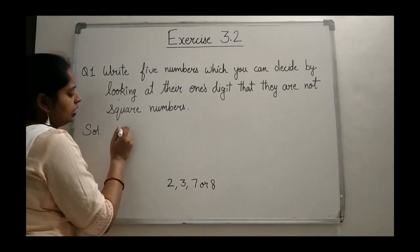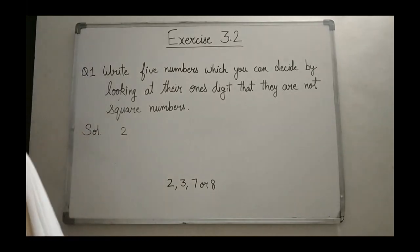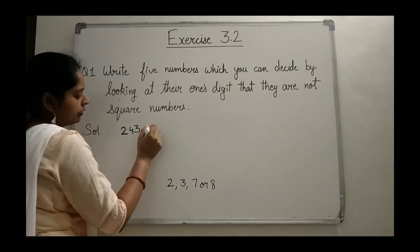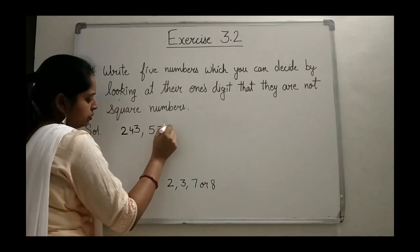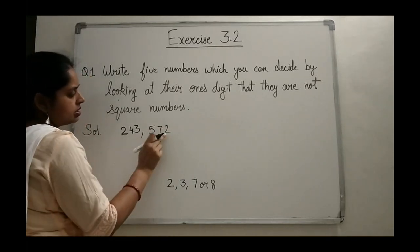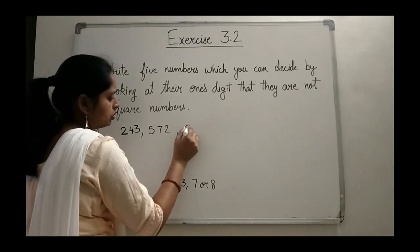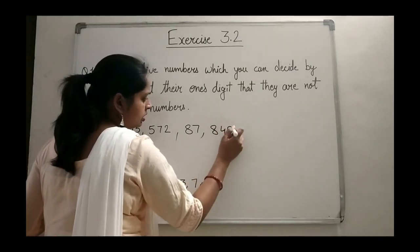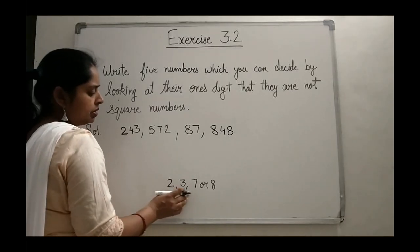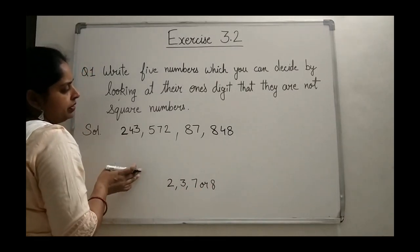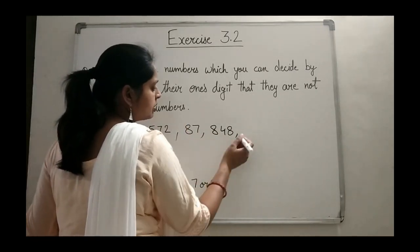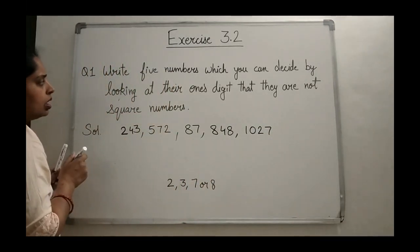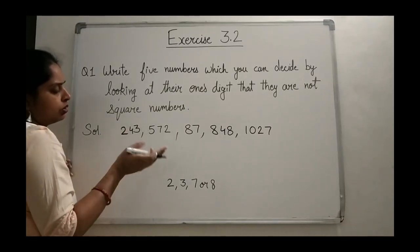They are asking for 5 numbers, so you can write anything like 200, 243, or 572 — this number is ending by 2. Or you can write 848, which is ending by 8. Any number ending by those digits is not a perfect square. For example, 1027 — you will choose your own numbers.